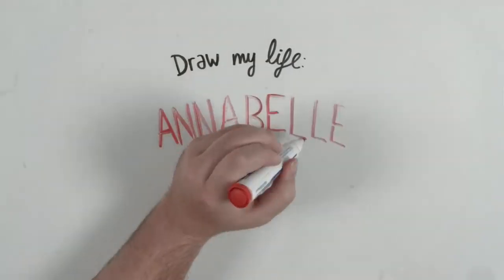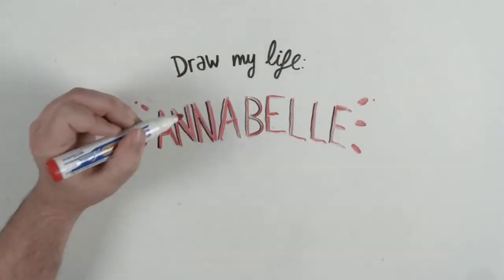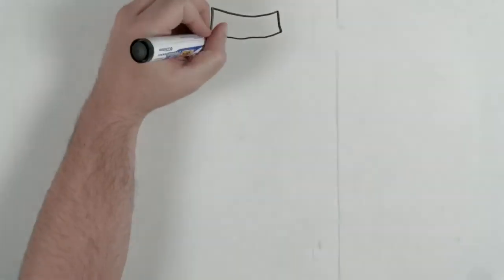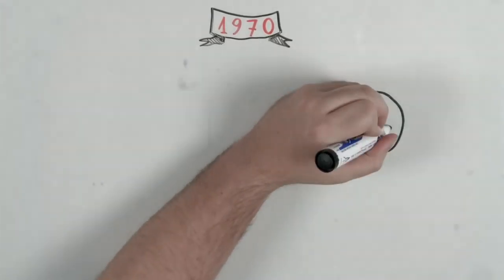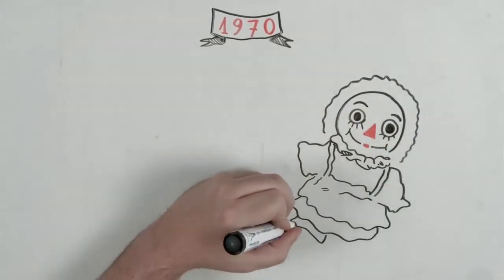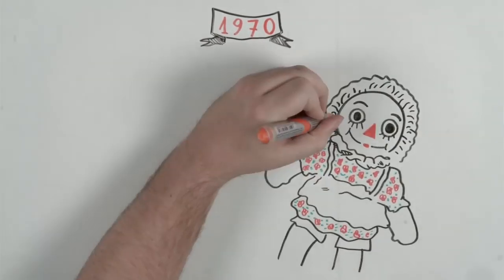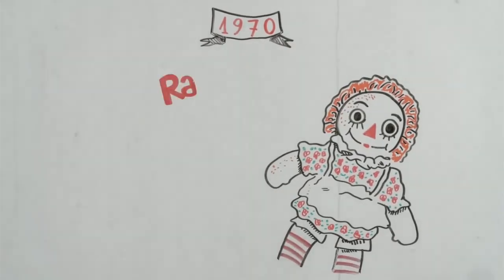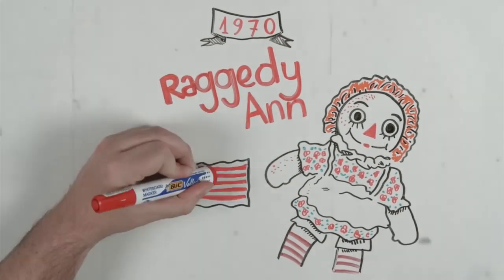Welcome to the Draw My Life about Annabelle. Many of you asked for this video, so we hope you enjoy it. It was 1970 when a woman bought her daughter Donna a doll called Raggedy Anne. These dolls were created by American writer Johnny Grell for a series of children's books in 1915. This character was very successful.